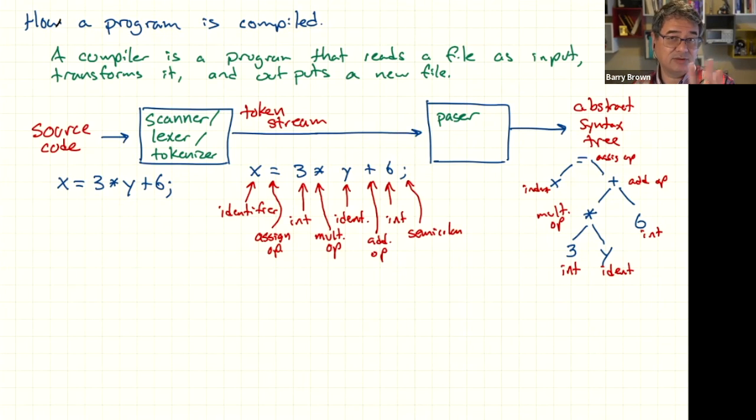So the parser really does two things. First of all, it organizes the program into an abstract syntax tree. And if it is successful in doing so, it means that the program you have fed into this compiler obeys the rules of the language, kind of like the grammar of the language. So the rules of the language might mean if you are going to multiply things together, there must be something to the left and to the right of the multiply sign.